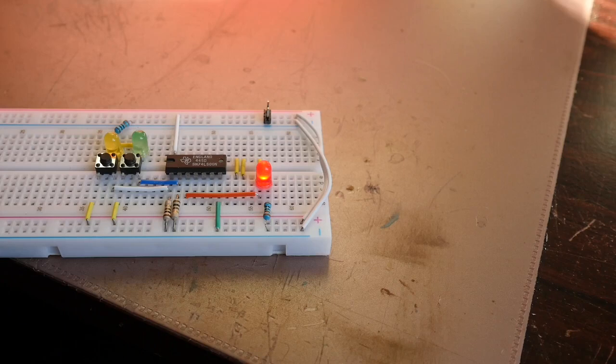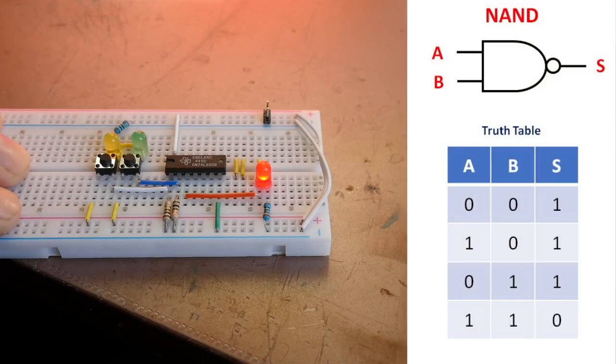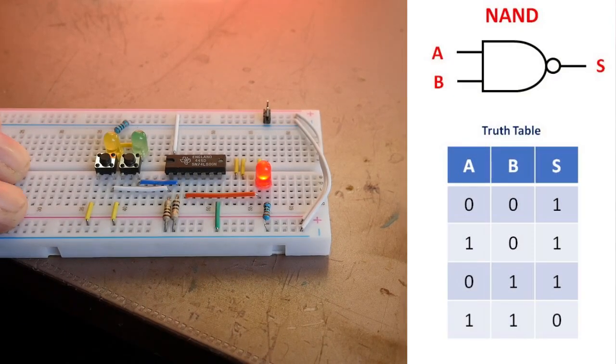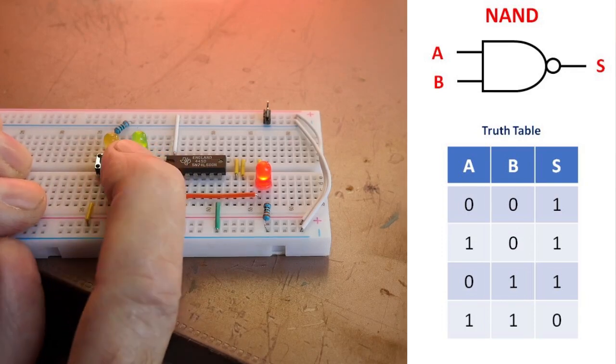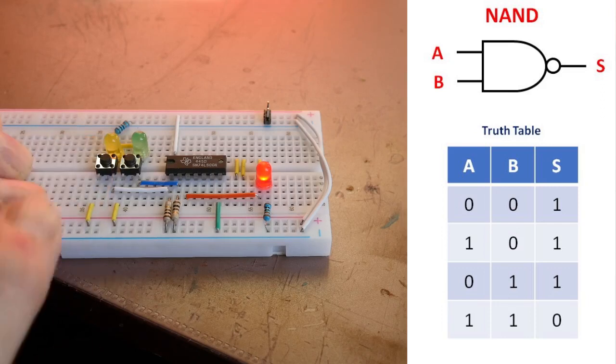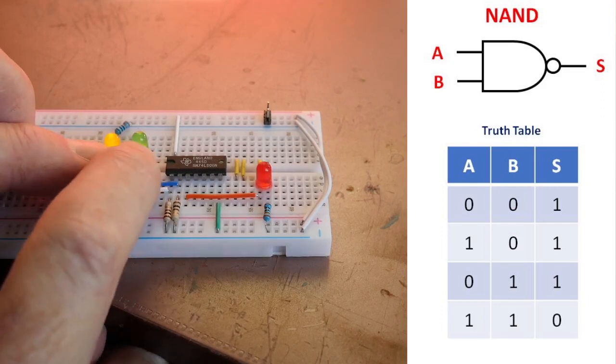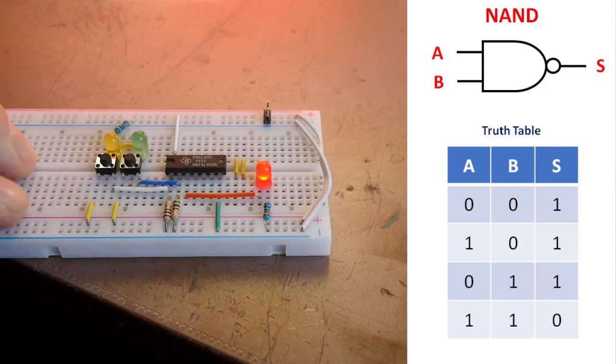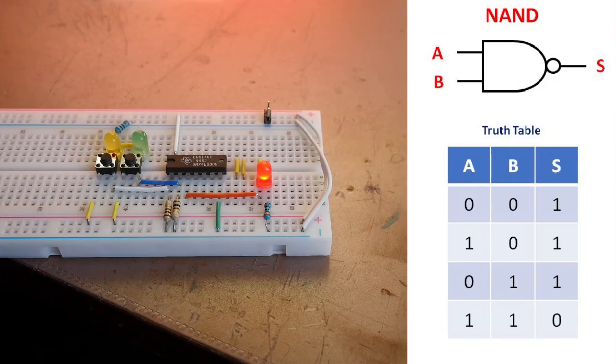This then is the NAND gate and you can see the truth table here. With both inputs low the output is high, second input high output still high, first input high output still high, both inputs high output goes low. So it is indeed agreeing with the NOT AND which is what the NAND really means.